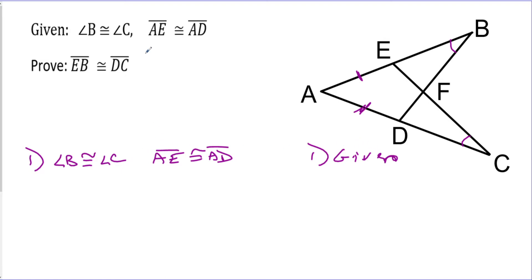Now we have to get EB and DC. Here's what I'm noticing: I don't really have — I have maybe this little triangle up here and this little triangle down here. I don't like those because they're not really using this side information that I got. So there's actually another set of triangles that's a little bit less obvious, but this is the kind of thing you need to look out for.